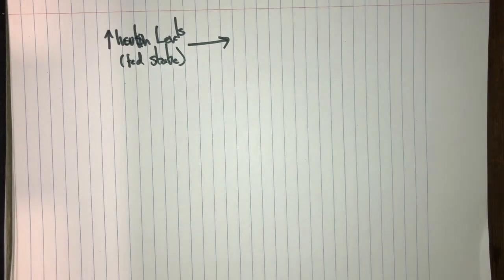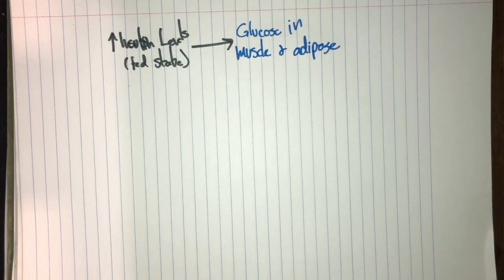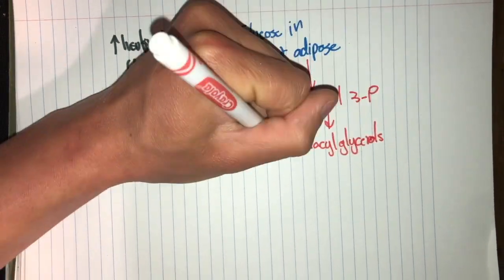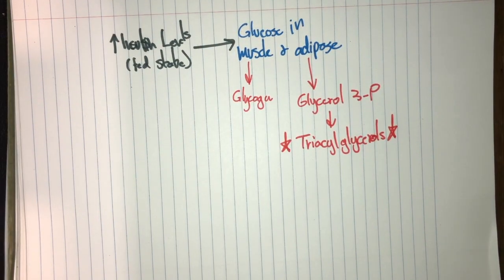These increased insulin levels in the fed state can result in a bunch of things. First of all, the glucose can then enter the muscle and the adipose tissue. When it enters the muscle, it can lead to glycogen storage. And when it enters adipose tissue, it provides glycerol-3-phosphate for the synthesis of the triacylglycerols, which is very important. We'll talk about that later.